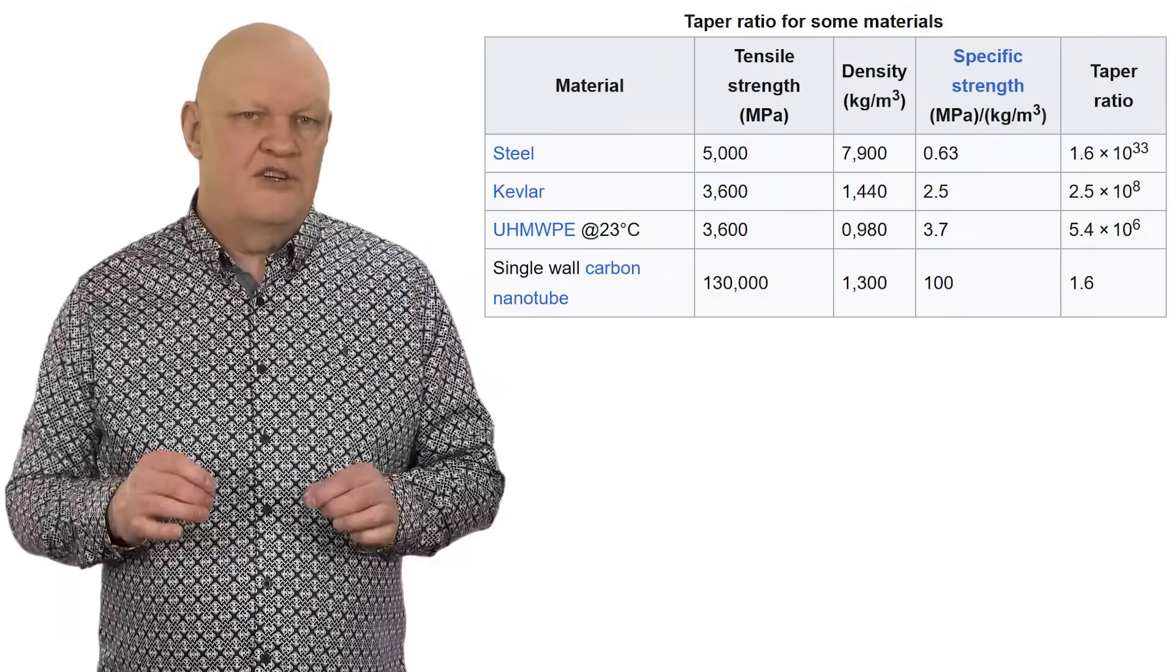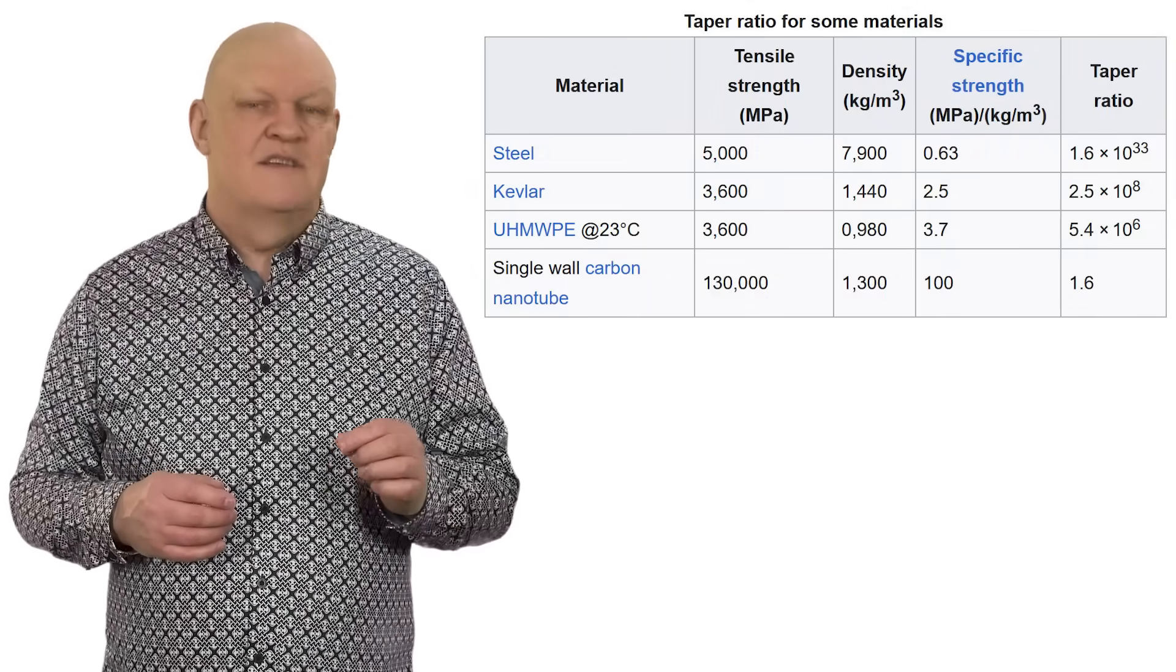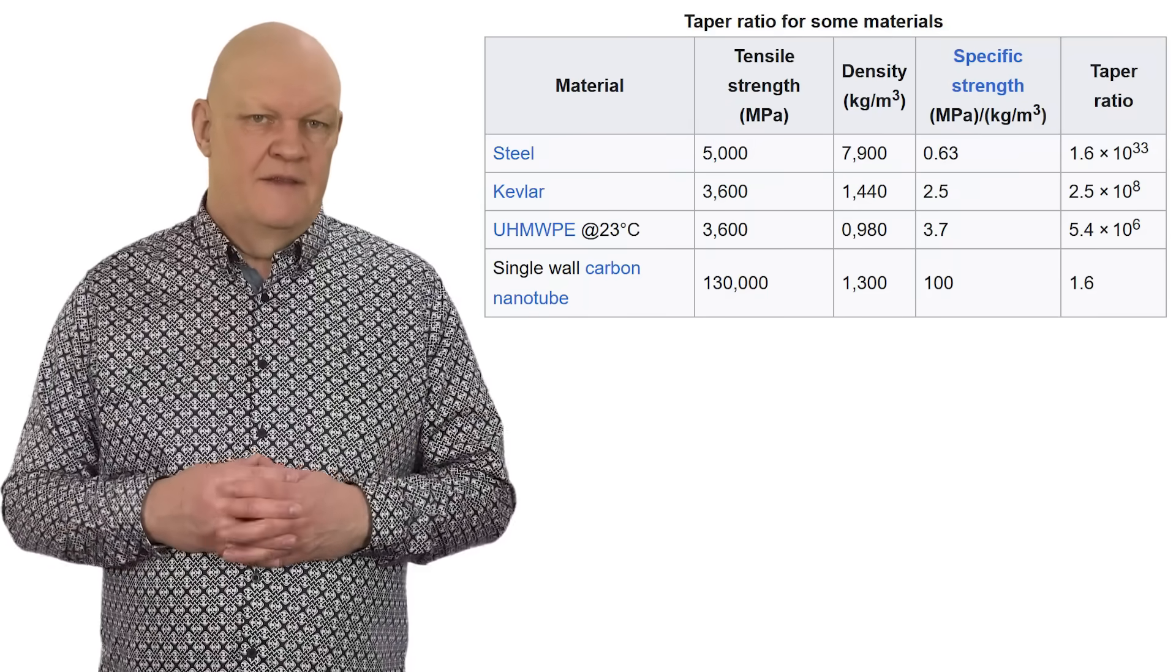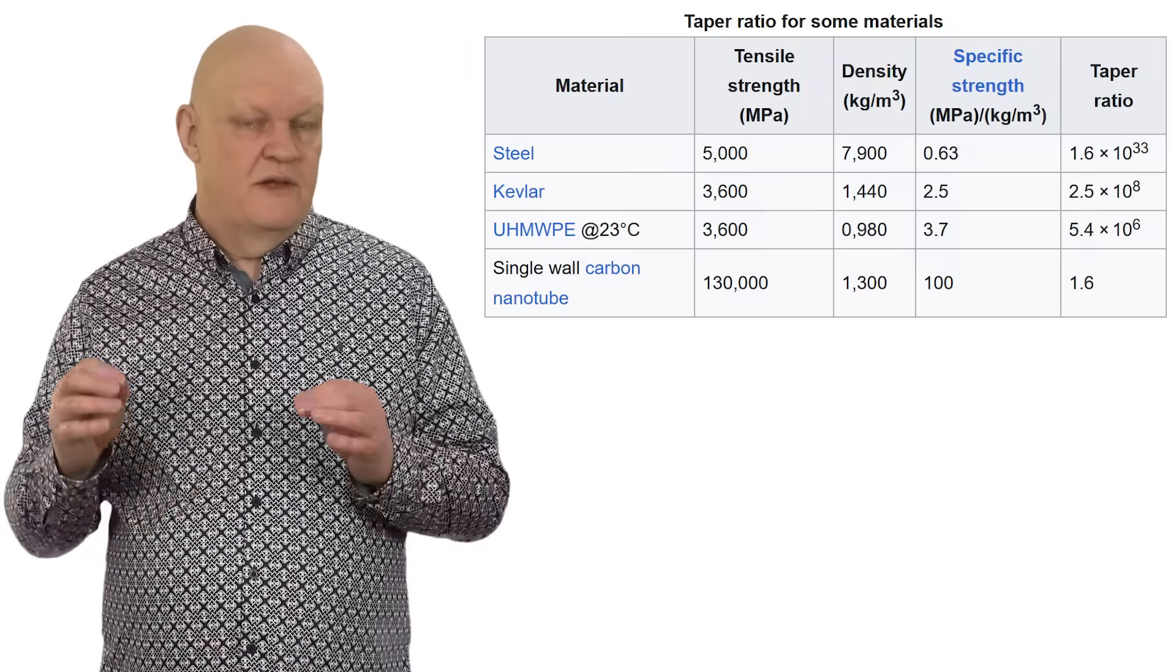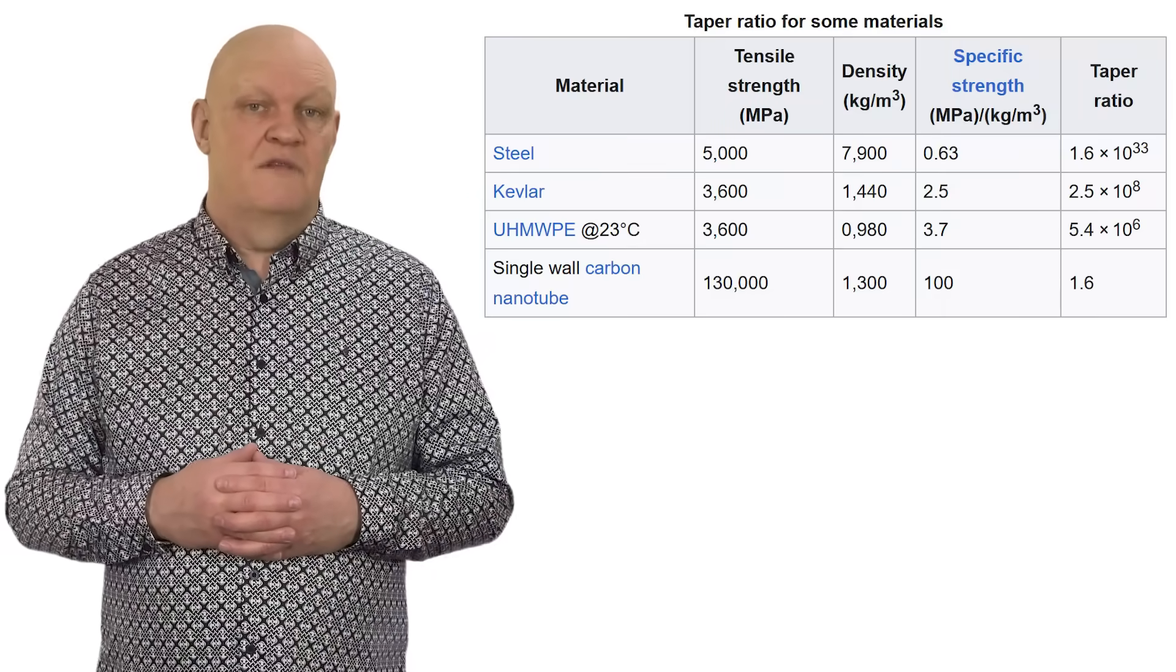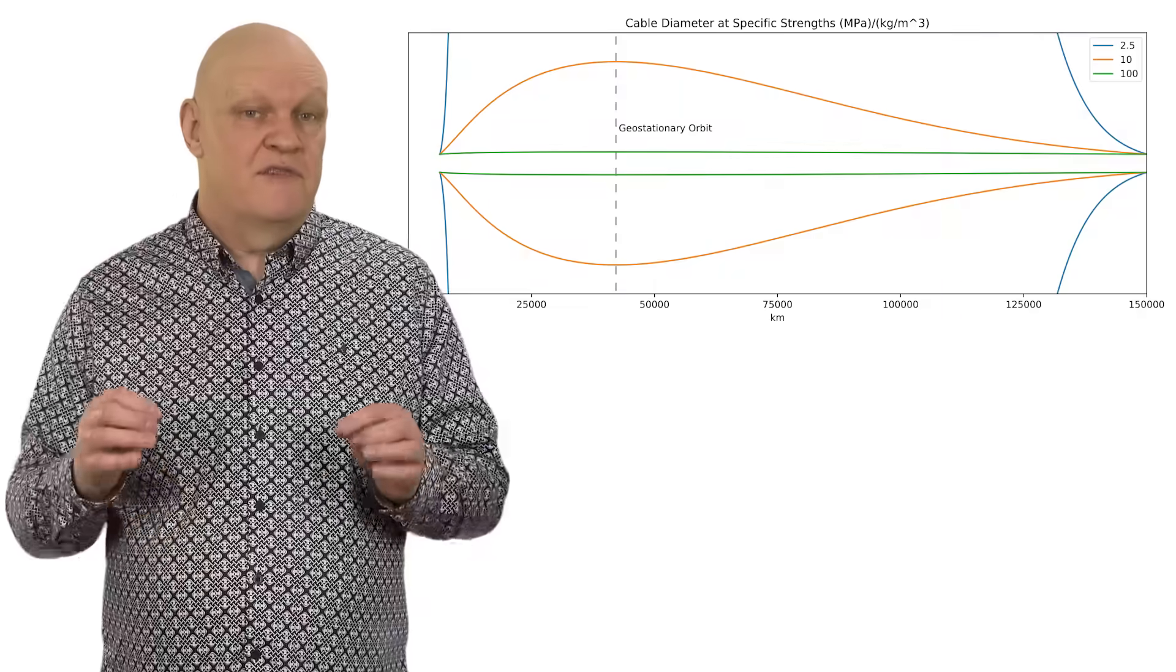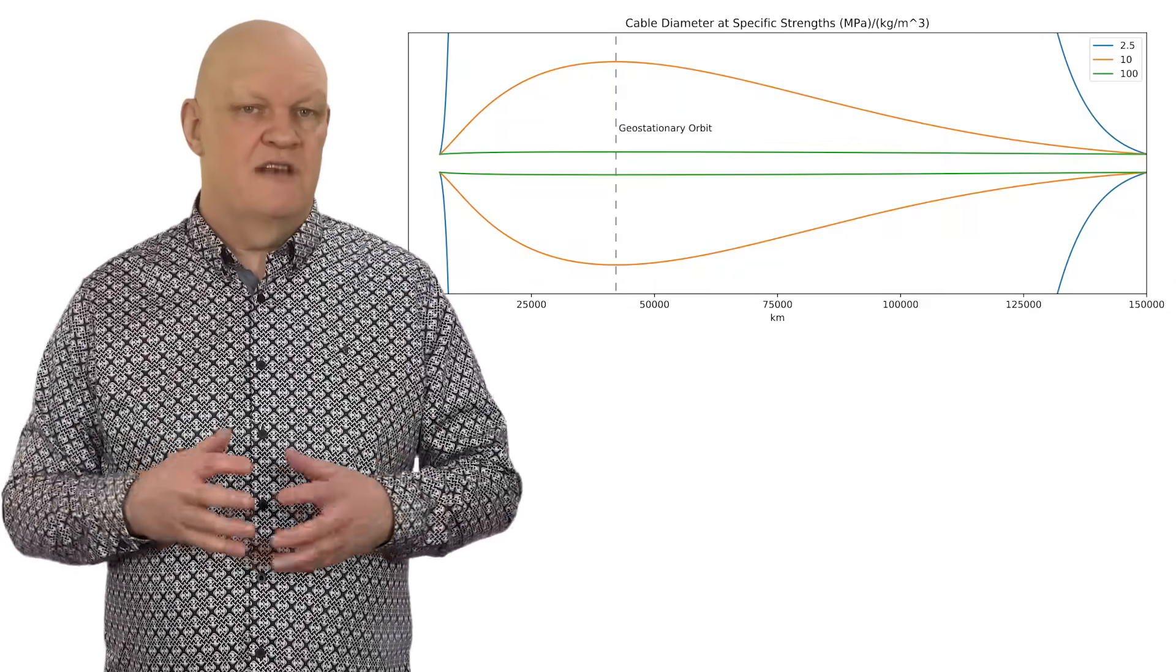If you look at the taper ratio for some materials, steel, while being strong, has a way greater density, so its taper ratio will be 1.6 times 10 to the power of 33. This means that to hold a cable up made out of steel vertically which will be 35,768 km long would mean the thickness of the cable at the top will be wider than the known universe.